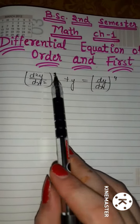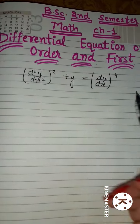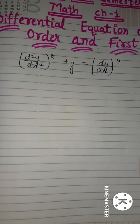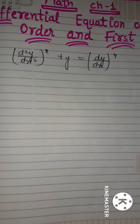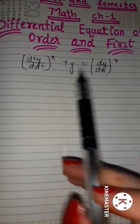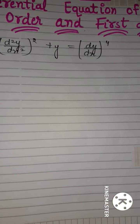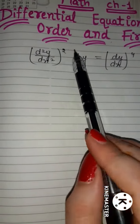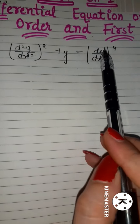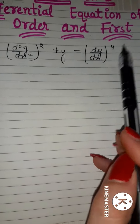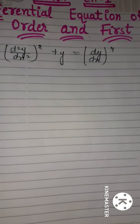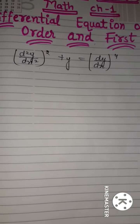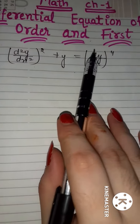देखिए friends, मैंने यहाँ पर एक example note किया है। इस equation में अगर हमसे degree और order पूछा जाए तो क्या होगा? यह differential equation है: (d²y/dx²)² + y = (dy/dx)²। इसका order और इसकी degree कितनी है — equations में कैसे पता चलेगा, देखिए बताती हूँ।